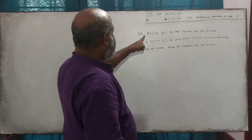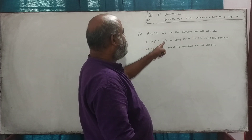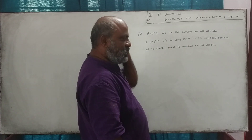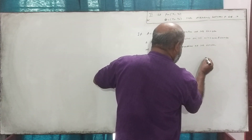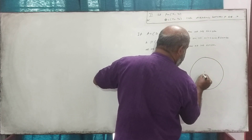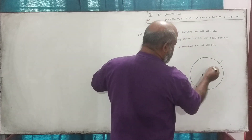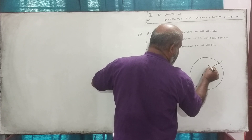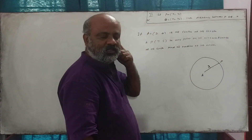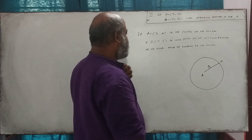Now we have to write: if A is equal to (2, 4) is the center of the circle, P is the center of the circle. Find the radius of the circle. The distance between any point of the circumference of the circle and the center of the circle is called the radius of the circle.